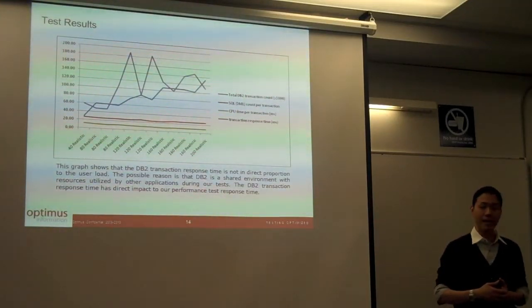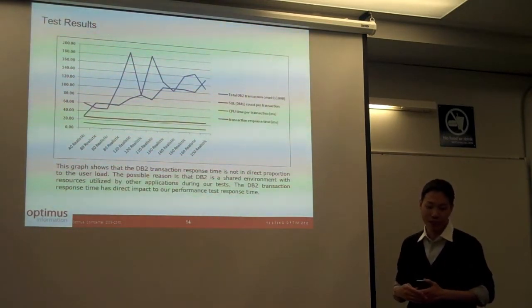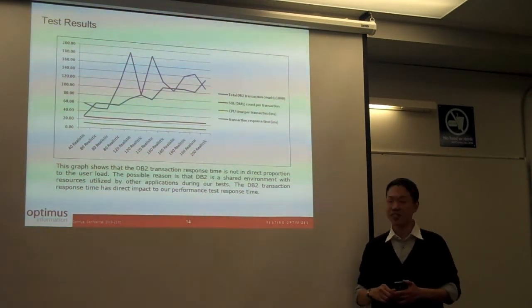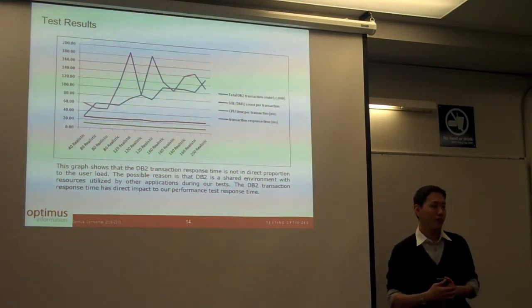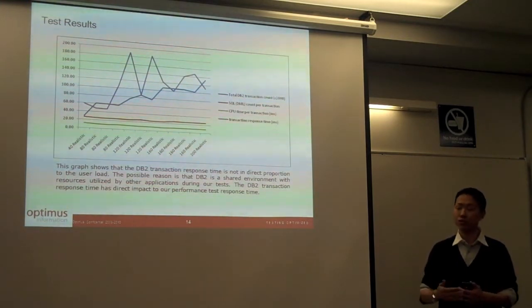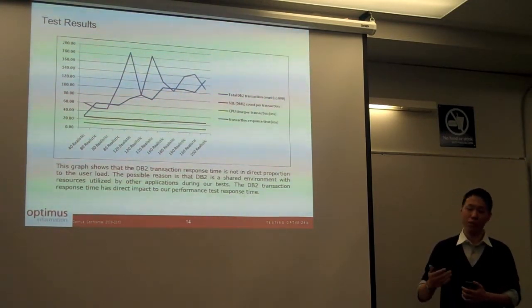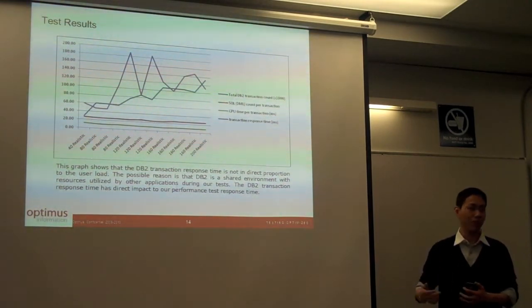There's no real way to eliminate that variable or that contributing factor to your inconsistent response time, but in production, they are also the same, so we just assume that our response time captured from such infrastructure, such environment, also replicate production.